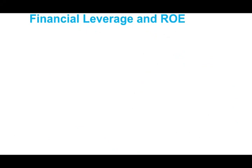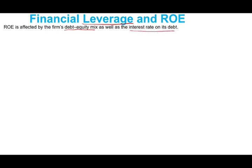Now we're going to look at financial leverage. Leverage is when you are using something else to help your lever — here we're using financial leverage. How does financial leverage affect specifically return on equity? To illustrate this concept, we're going to look at two examples: one company with no debt and one with some debt. Return on equity is affected by the firm's debt mix — the debt-equity mix — as well as the interest rate on the debt.